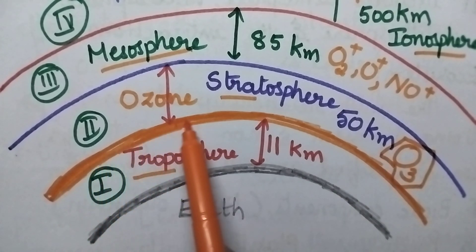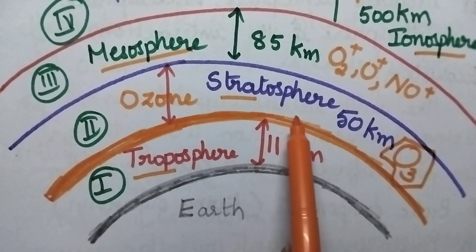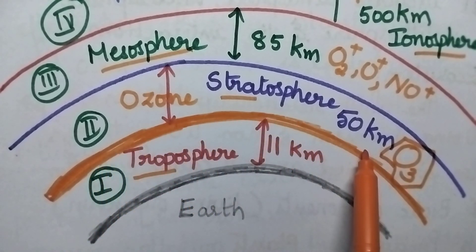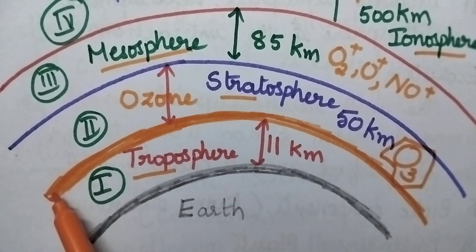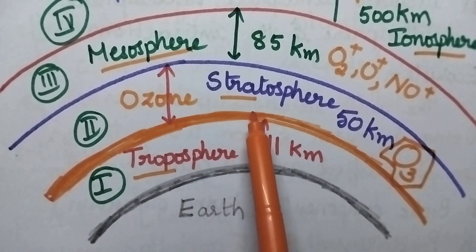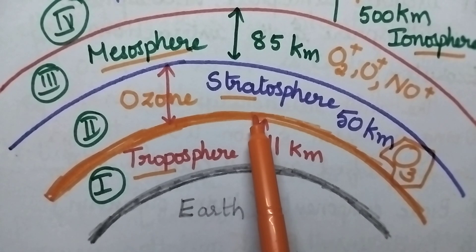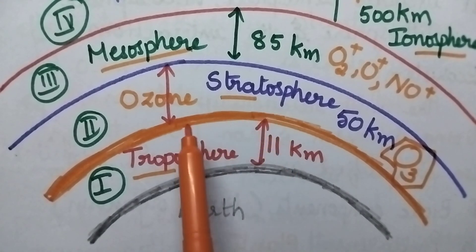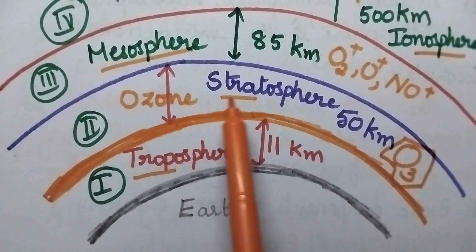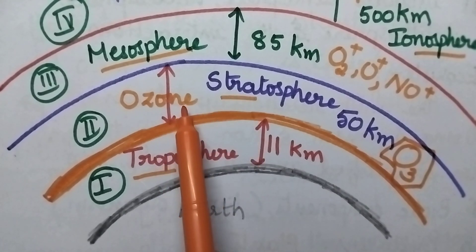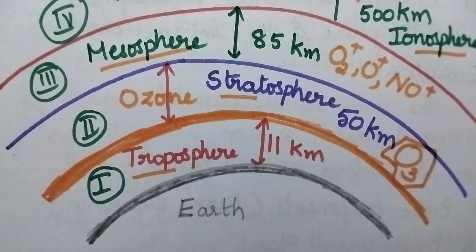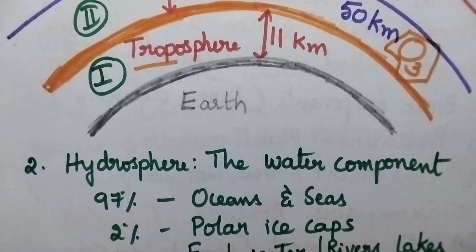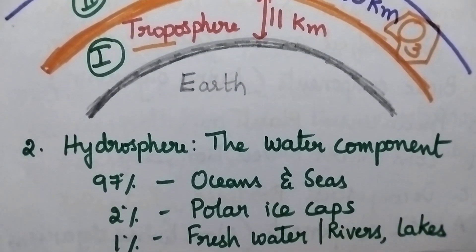The lower layer of the stratosphere is covered with ozone, and it acts as a blanket that filters dangerous UV radiations. The main element present in the stratosphere is ozone.